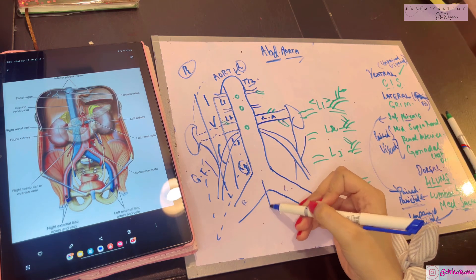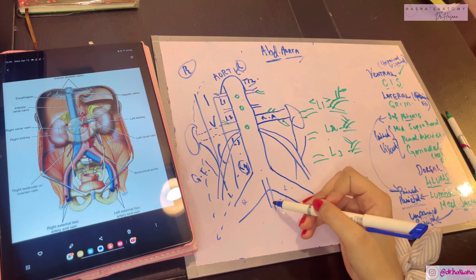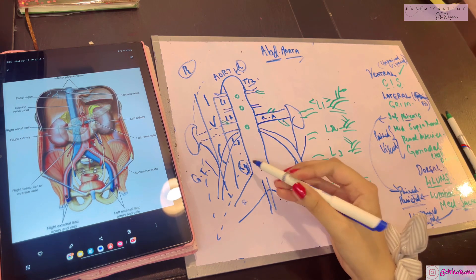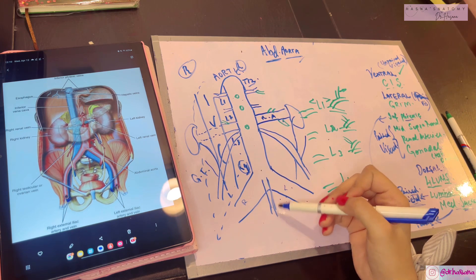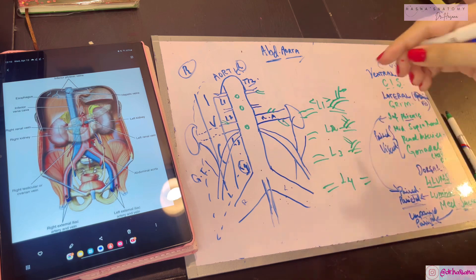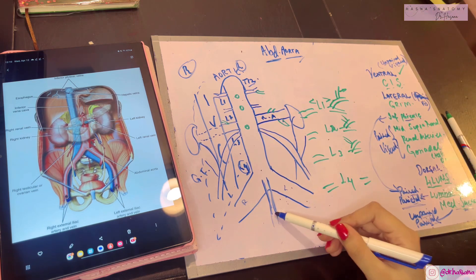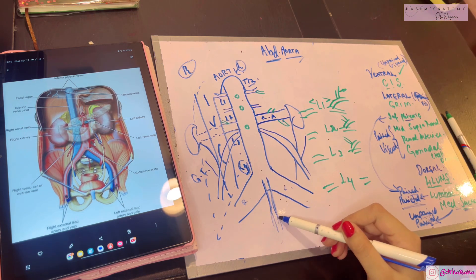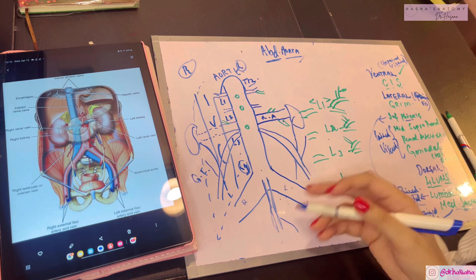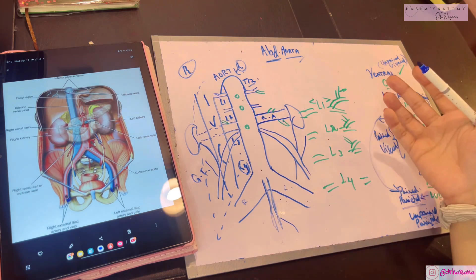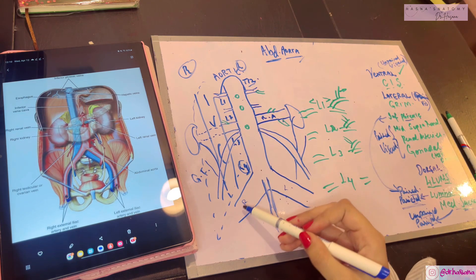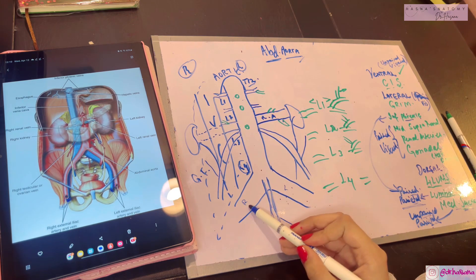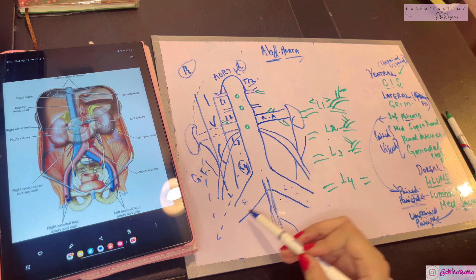The median sacral artery arises directly at the bifurcation of the aorta at the L4 level. It is a single artery running posteriorly, lying in front of the coccyx, and supplies the rectum. It also forms anastomoses with the iliolumbar and lateral sacral arteries.